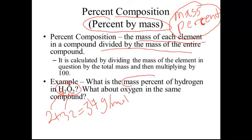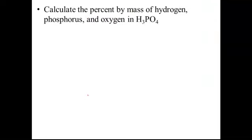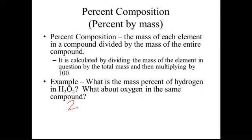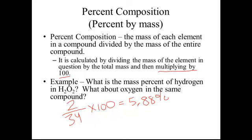If we want to know the percent of that mass that's hydrogen, we take the mass of hydrogen — 2 — and divide it by the total mass, 34, then multiply by 100. So 2 divided by 34 times 100 gives an answer of 5.88%. They don't give us any initial numbers, so we're not worried about significant figures here.